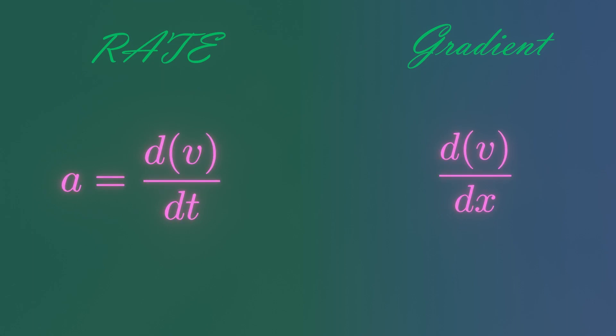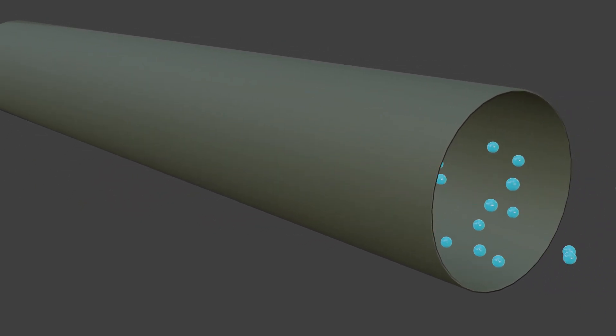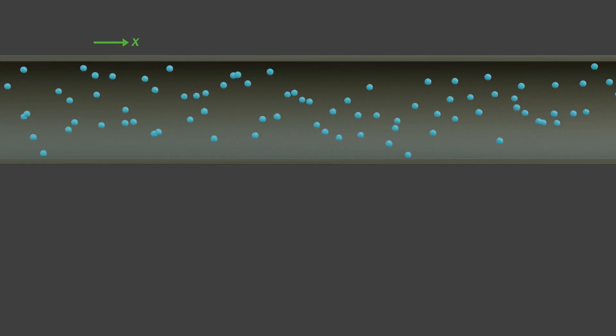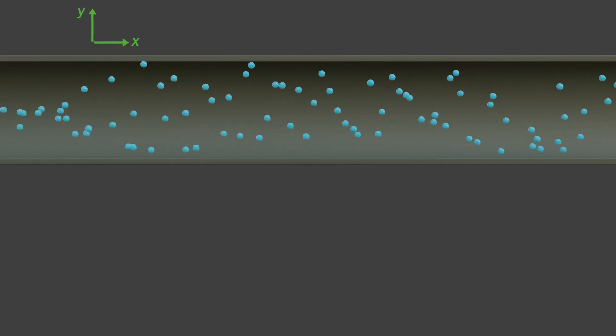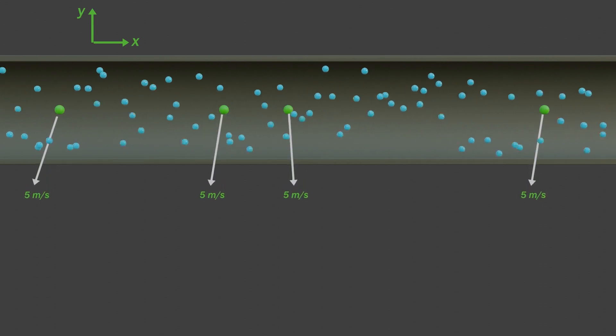So, these two words, gradient and rate, have a great difference. Now, consider water flowing through this pipe. The velocity acts only in x direction. I have marked some green points here. The velocity of water at these green points is same.